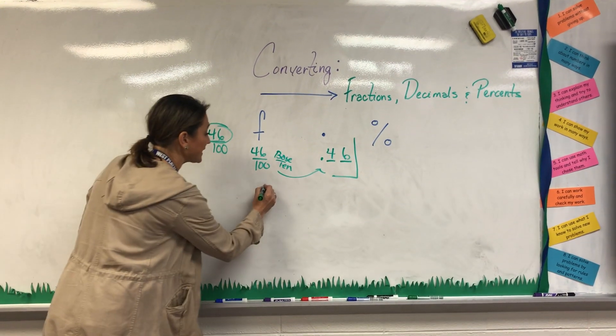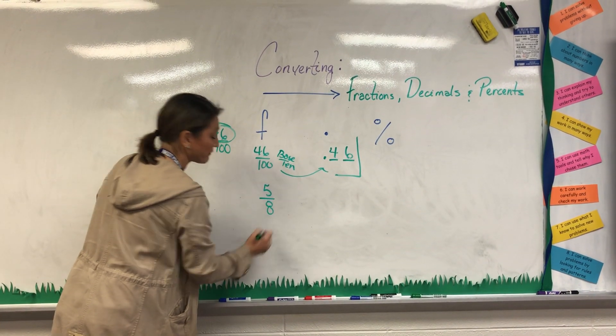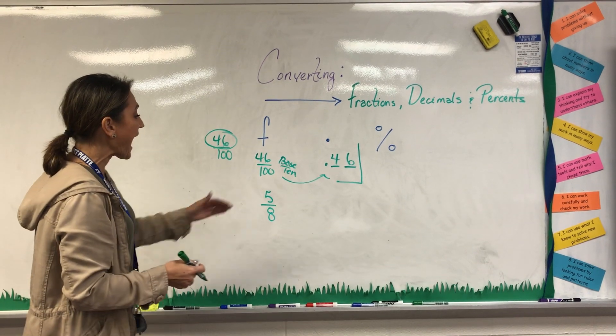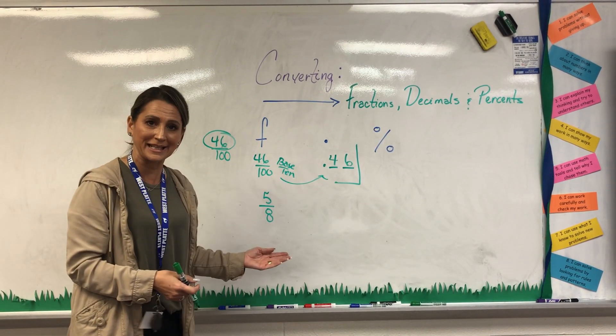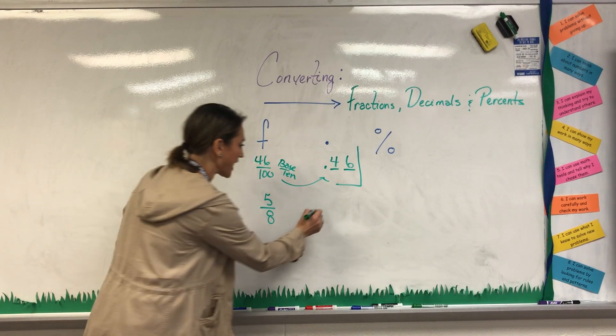But if I have a fraction that is not a base 10 number, for instance 5 eighths, I can't just look at that and turn it into a decimal by what I see. Kids will try to do this all the time.